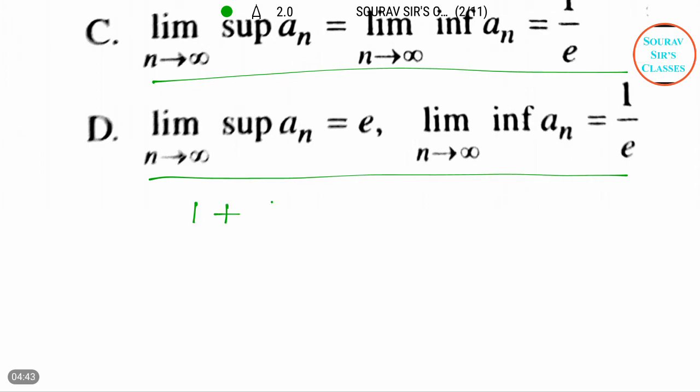a_n equals 1 plus 1 by n to the power n, that is when n is even. And in the case of n is odd, that will be 1 minus 1 by n to the power n. This is easy.